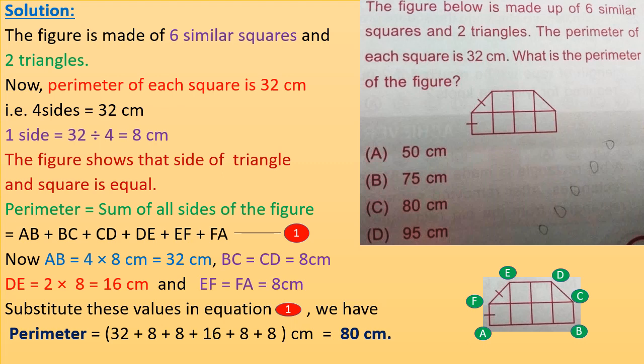DE equals 2 times 8 cm equals 16 cm (2 squares along DE). EF equals 8 cm and FA equals 8 cm. Substituting these values into equation 1: perimeter equals 32 plus 8 plus 8 plus 16 plus 8 plus 8 equals 80 cm. The correct option is C.